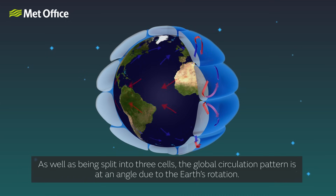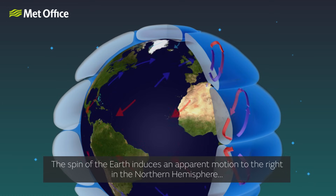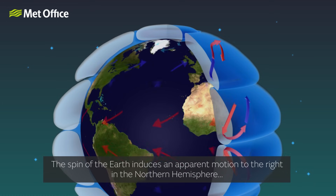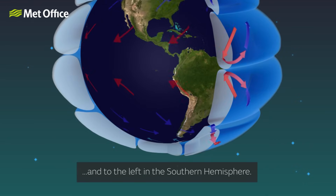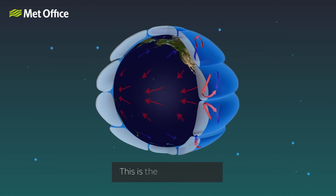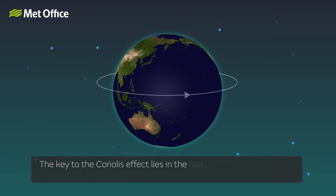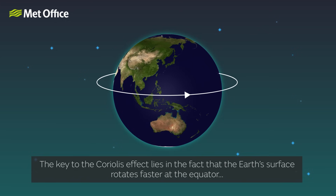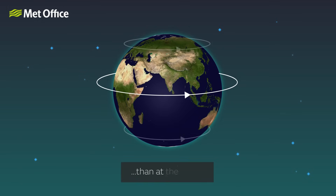As well as being split into three cells, the global circulation pattern is at an angle due to the Earth's rotation. The spin of the Earth induces an apparent motion to the right in the northern hemisphere and to the left in the southern hemisphere. This is the Coriolis effect. The key to the Coriolis effect lies in the fact that the Earth's surface rotates faster at the equator than at the poles.